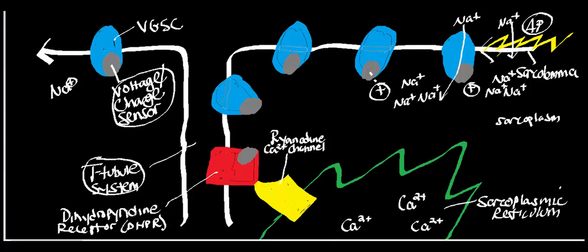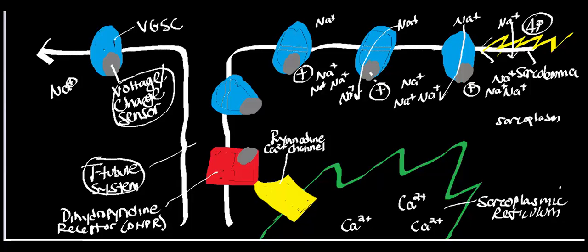When the next channel senses the positive charge, it opens and sodium moves through. Then more and more sodium influx occurs, and the next voltage sensor senses all that positive charge, the next voltage-gated sodium channel opens allowing sodium through again. You have the intuition that sodium is coming through, building up positive charge around the next one, and sodium moves through once again.